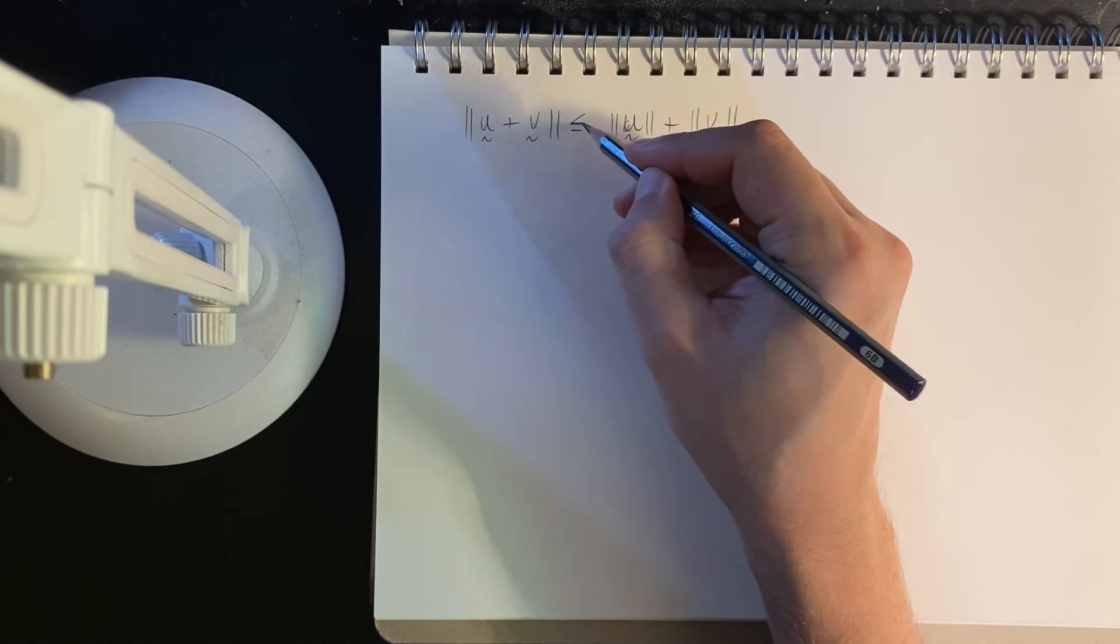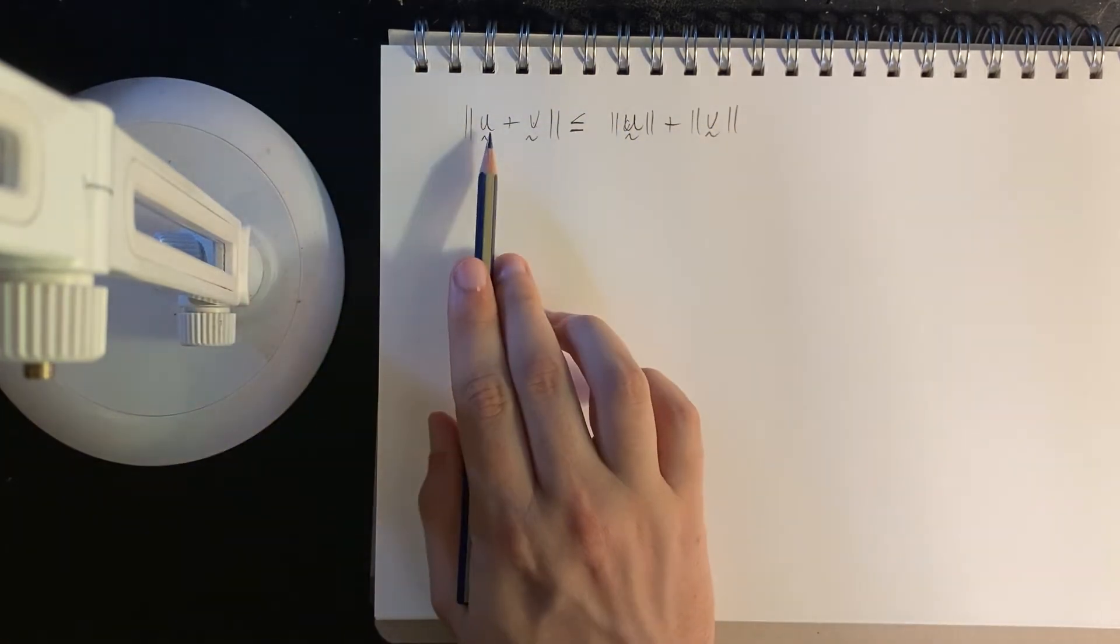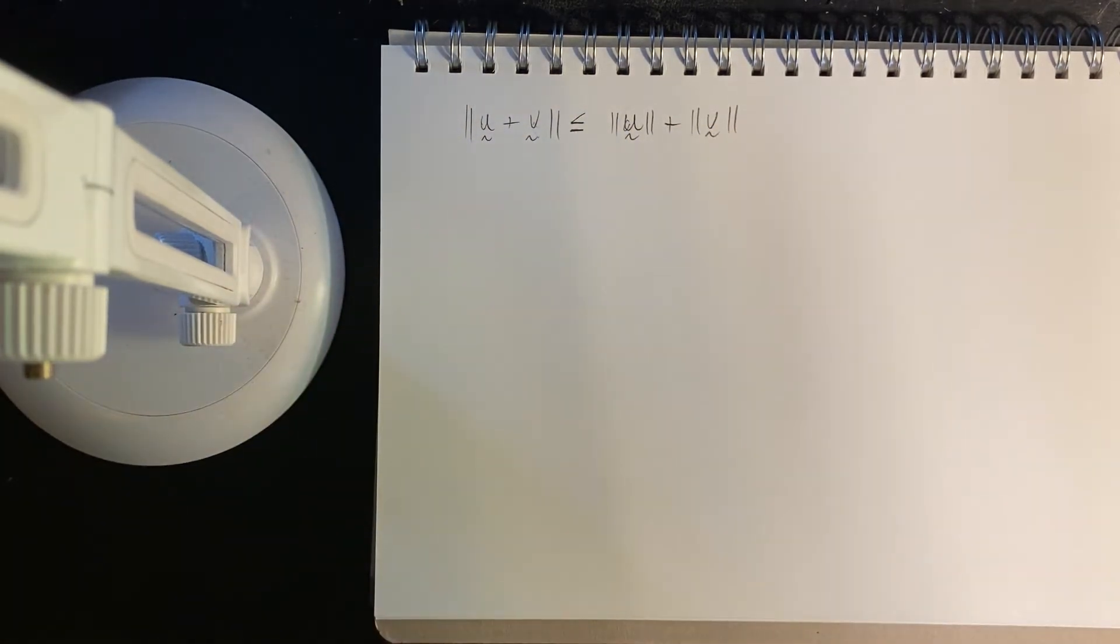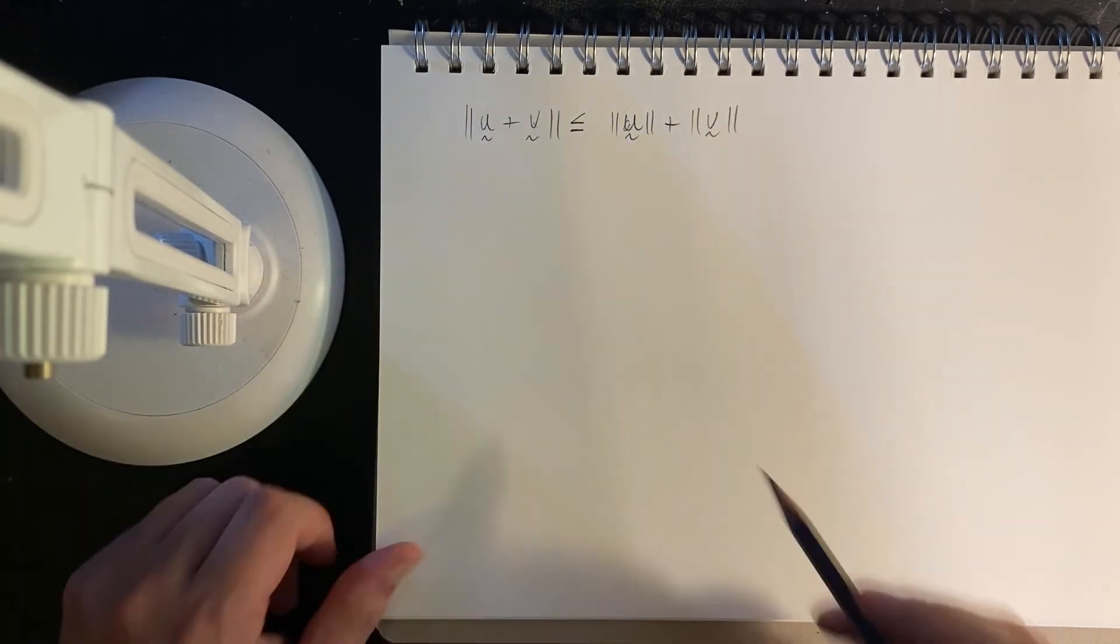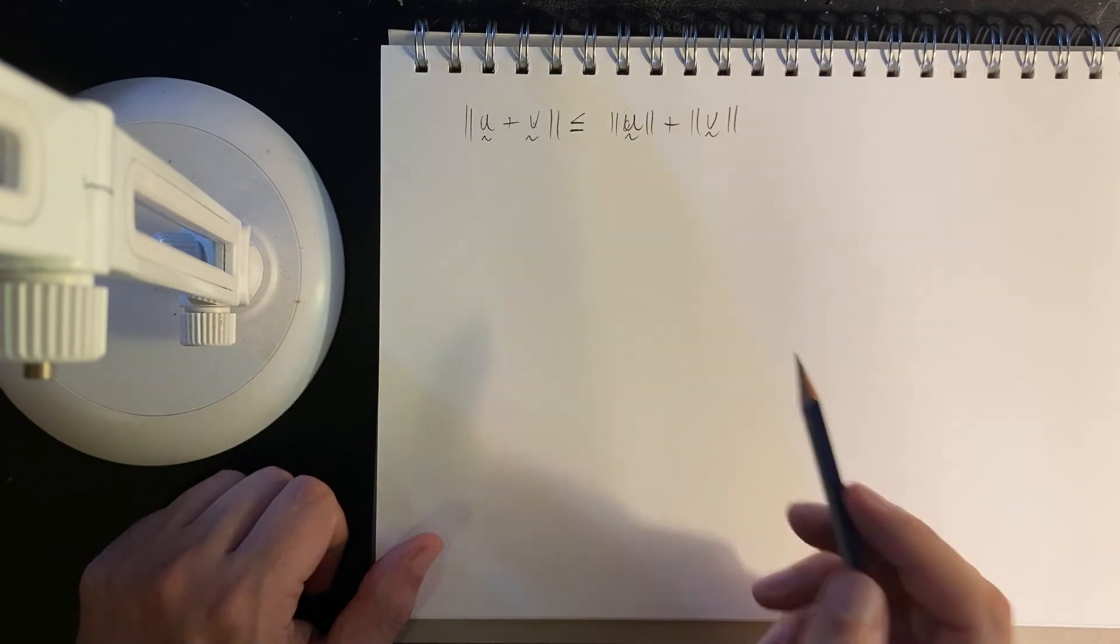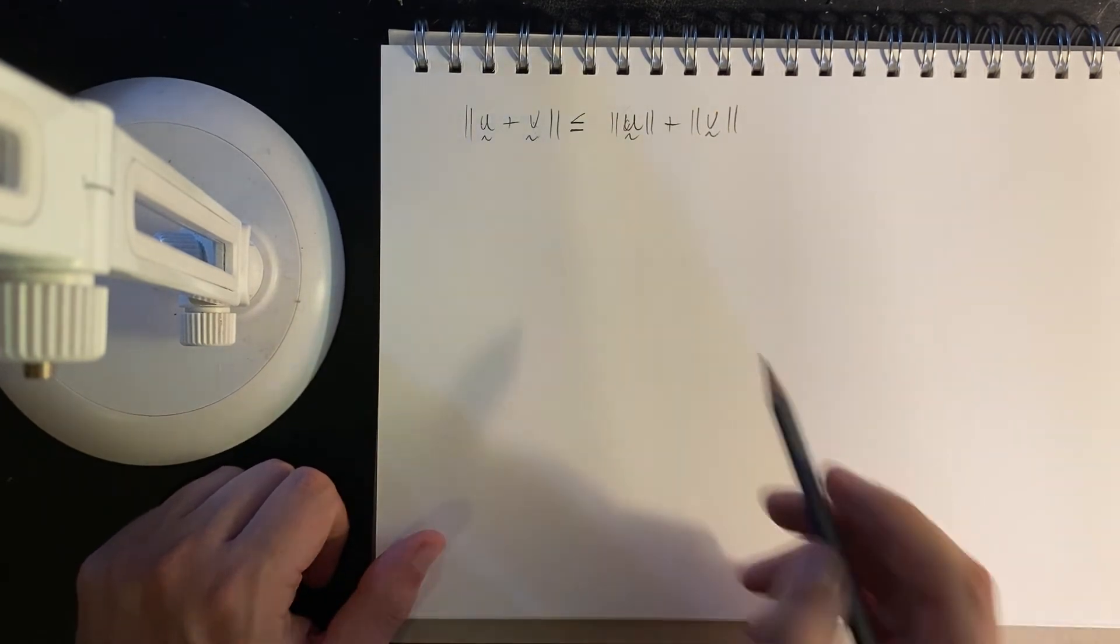So the triangle inequality states that the resultant of summing two vectors together has a length which is less than the individual lengths.